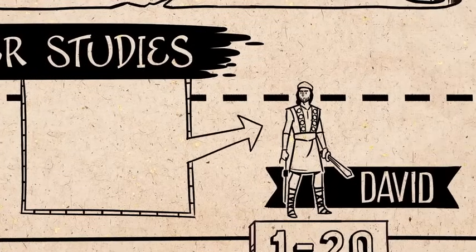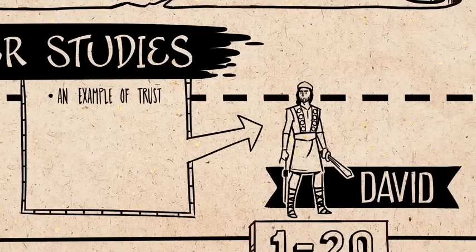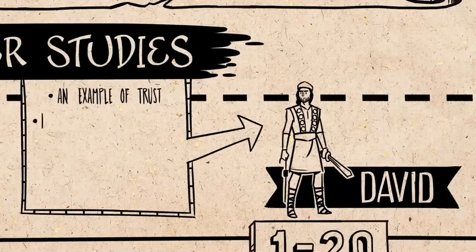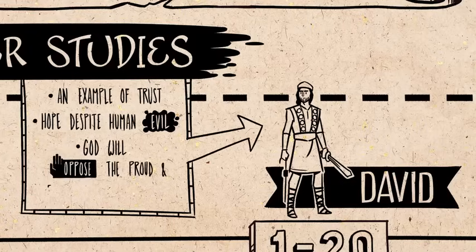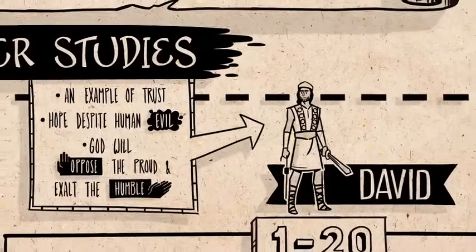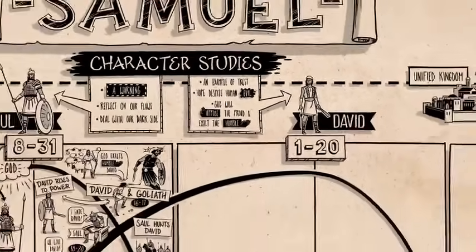David, on the other hand, is presented as an example of patience and trust in God's timing in our lives. Running in the wilderness, chased by Saul, David had every reason to think that God had abandoned him — but that's not what he thinks. David's story encourages us to trust that despite human evil, God is working out his purposes to oppose the proud and to exalt the humble. And that's what First Samuel is all about.